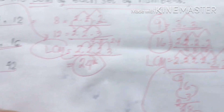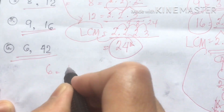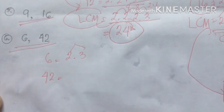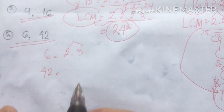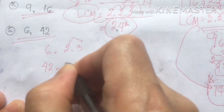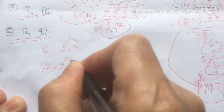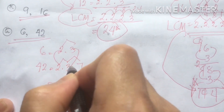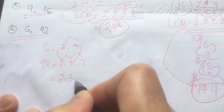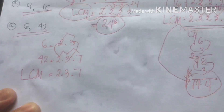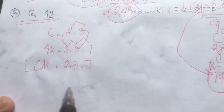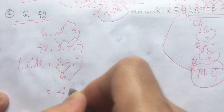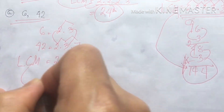Next is 6 and 42. Factor of 6 is 2 × 3. Factor of 42 is 2 × 3 × 7 — six times seven is 42. The common factors are 2 and 3. LCM = 2 × 3 × 7 = 42. Our LCM of 6 and 42 is 42.